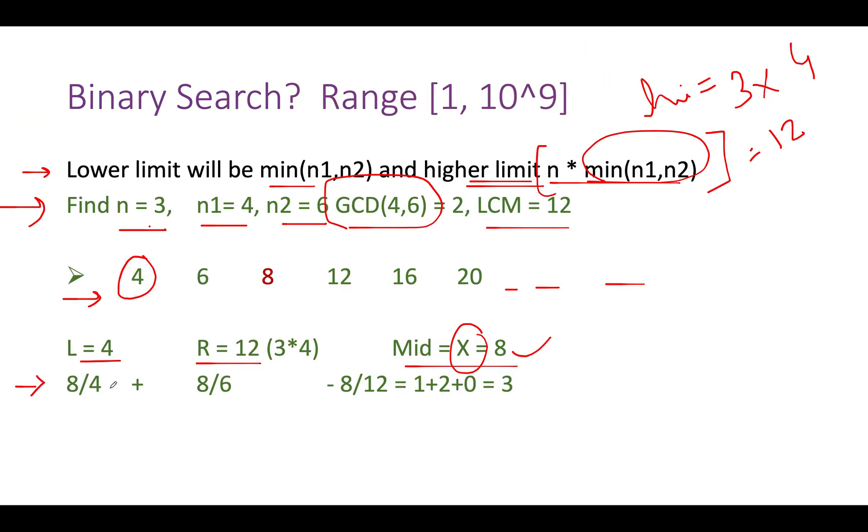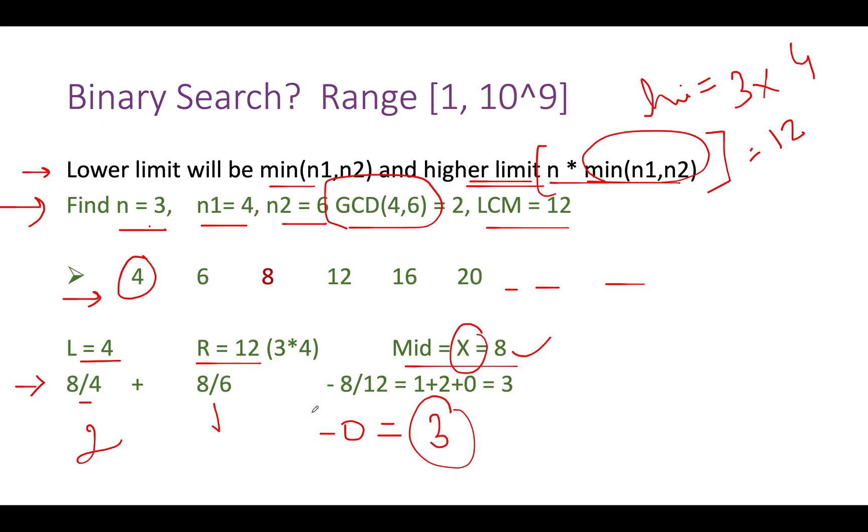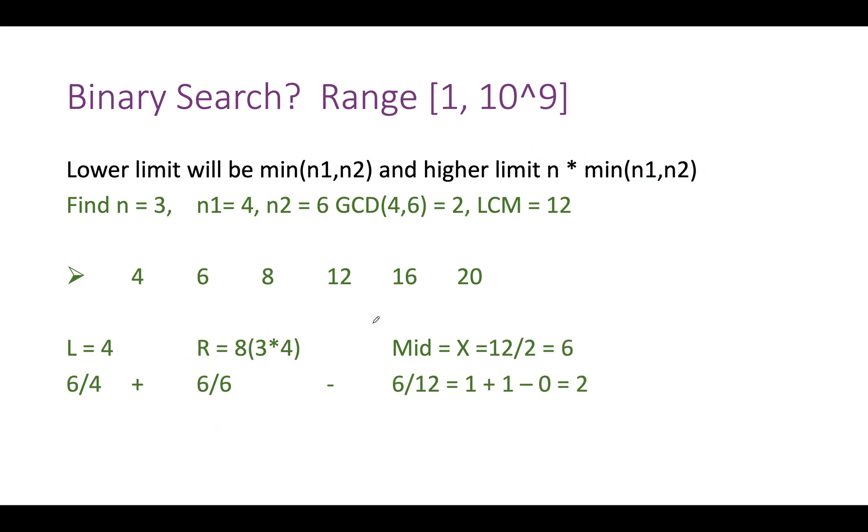Let's do that: 8 by 4 is 2, 8 by 6 is 1, 8 by 12 is 0. The factor count comes out to be 3. If the factor count is not less than n, we update high to mid. That means right gets updated to 8. I have updated the right to 8, my low points here, my high points here.